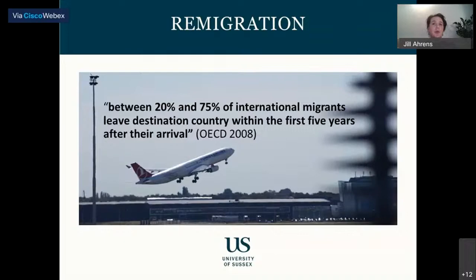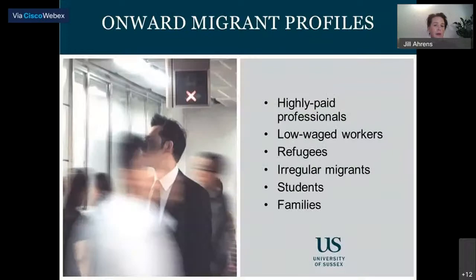Estimates that predate these events already indicated that between 20 and 75 percent of international migrants leave their destination country within the first five years after arrival. This means a high proportion of migrants depart to either temporarily return to their origin country or to onward migrate to another destination. There is an established literature on return migration, but onward migration remains relatively under-researched — largely because migration has generally been conceptualized as a bipolar process between an origin country and a particular destination country.